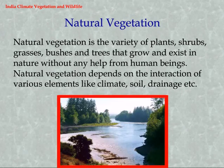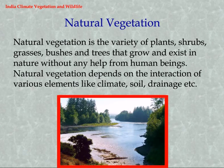Natural Vegetation. Natural vegetation is the variety of plants, shrubs, grasses, bushes and trees that grow and exist in nature without any help from human beings. Natural vegetation depends on the interaction of various elements like climate, soil, drainage, etc.